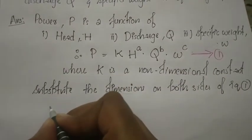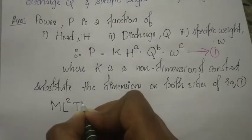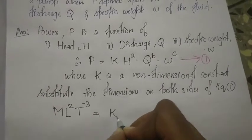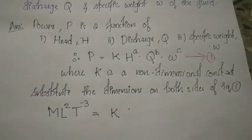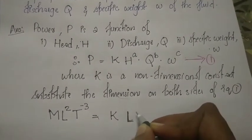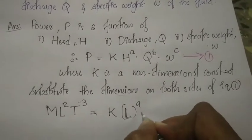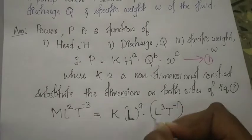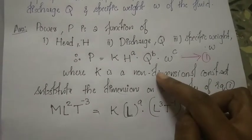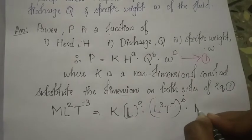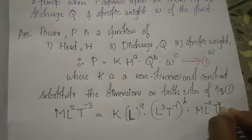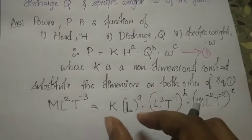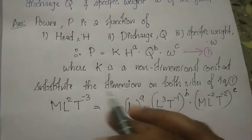Power has the dimension M L^2 T^(-3). On the right-hand side, K is non-dimensional. Head H has dimension L raised to A. Discharge Q has dimension L^3 T^(-1) raised to B. Specific weight W has dimension M L^(-2) T^(-2) raised to C.